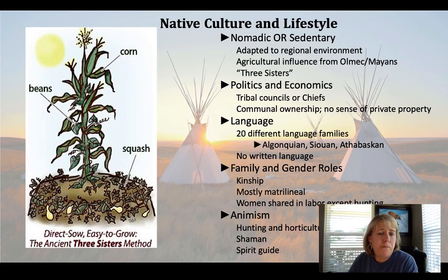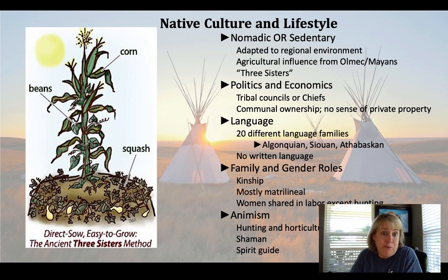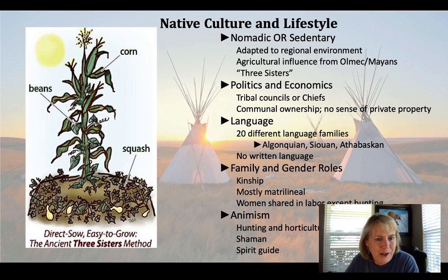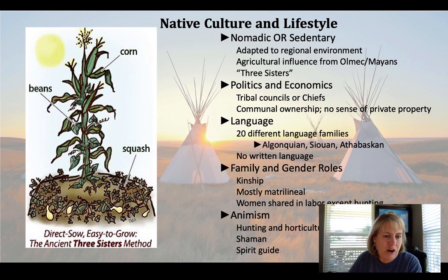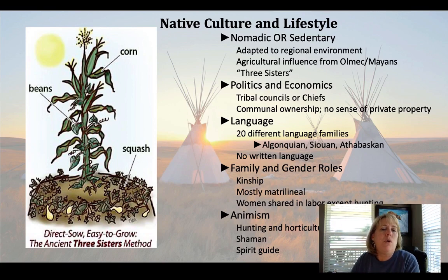Some tribes were led by a chief, some by a tribal council, and some used both. Interestingly, this leadership was typically designated through the maternal line — the power came from the mother's side of the family — though sometimes it was paternalistic, coming from the father's side. On top of that, they all spoke different languages. There were 20 different language families in North America alone, and within those families there were many dialects, so communication between tribes was difficult. That's often why Native Americans couldn't simply band together to fight off expansion into their lands — they weren't all alike, and they weren't all working toward the same goals.